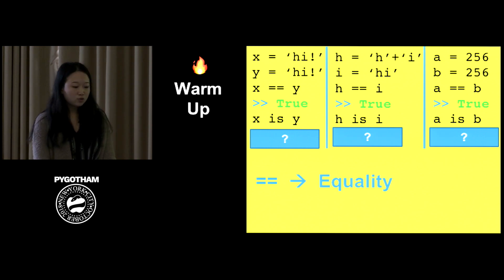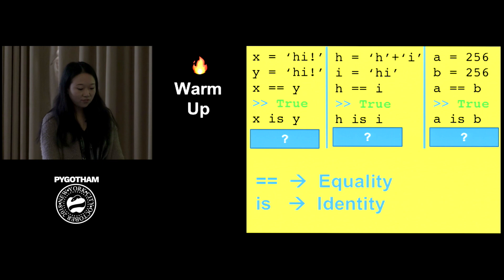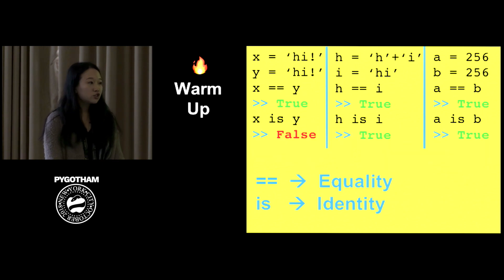For x and y, which refer to hi with an exclamation point, this will be false. However, the other two will be true. How does Python decide whether to create a new object when you have something with the same value? That may be one question you have.